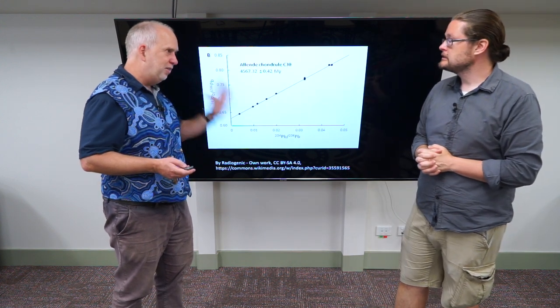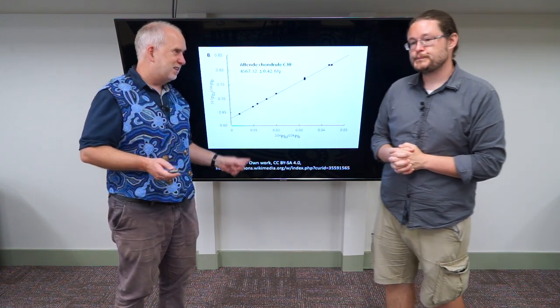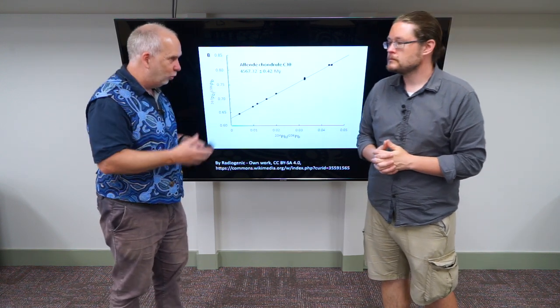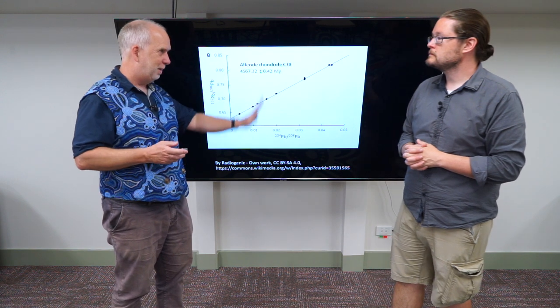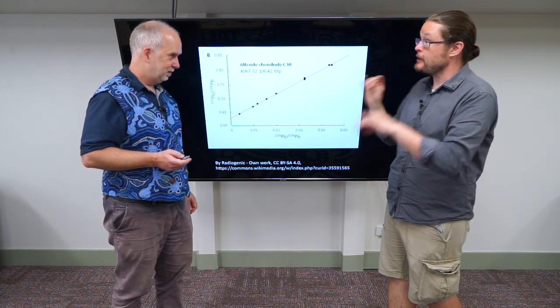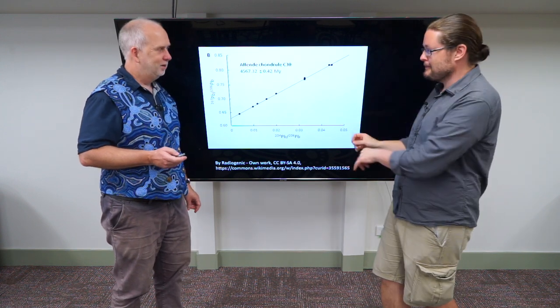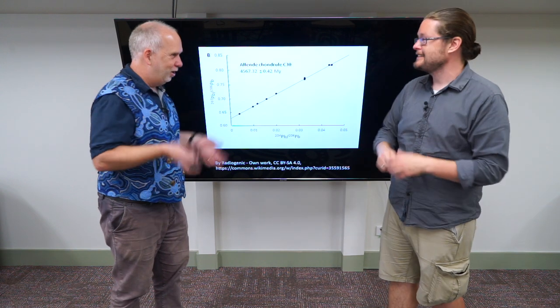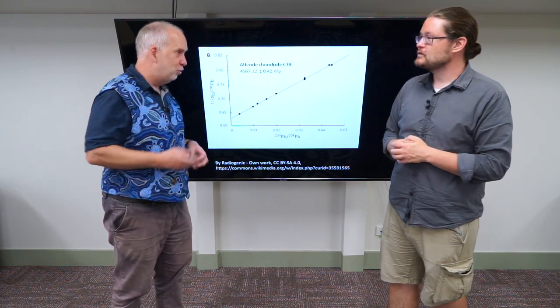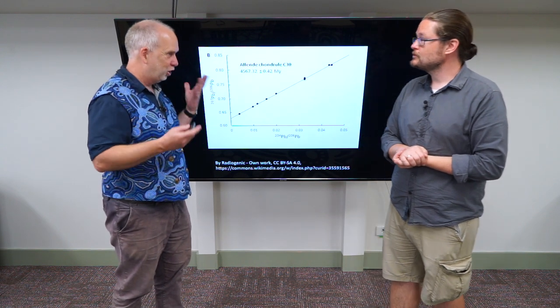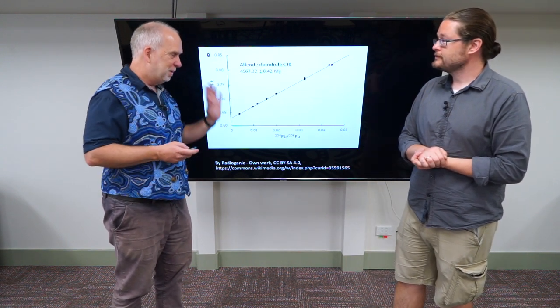And you can also use other radioactive elements. So this lead dating is the most precise, but there are many other combinations of radioactive elements that you can also use. And they all give answers about the same. So we have lots of elements that we can use and lots of reactions that we can measure really well here on Earth. Lots of meteorites from space with lots of these chondrules and lots of these chondrules have lots of these elements.